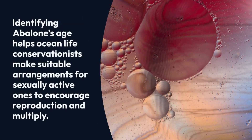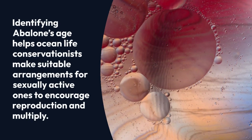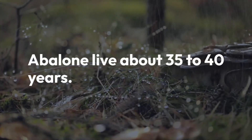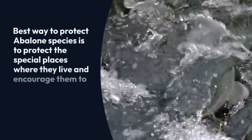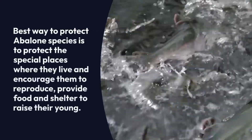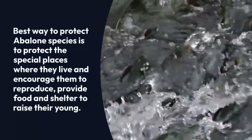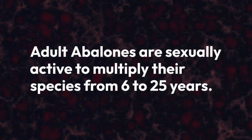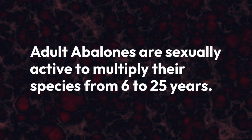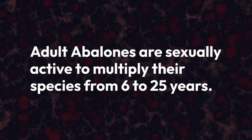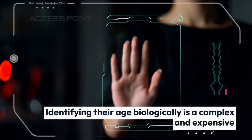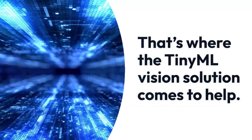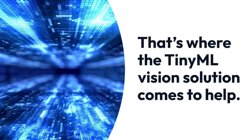Abalone live about 35 to 40 years. The best way to protect abalone species is to protect the special places where they live, encourage them to reproduce, and provide food and shelter to raise their young. Adult abalone are sexually active and able to multiply their species from 6 to 25 years. Identifying their age biologically is complex and expensive — that's where the TinyML vision solution comes to help.